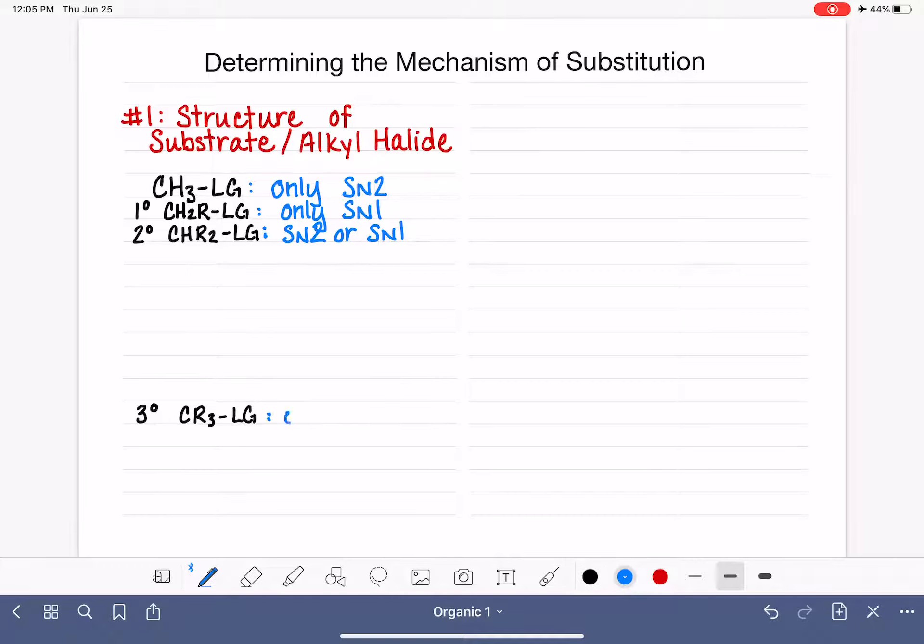These will only do SN1 because they're too sterically hindered or too crowded for the SN2 mechanism where the nucleophile has to attack the carbon before it loses its leaving group. This type of molecule is only capable of doing an SN1.